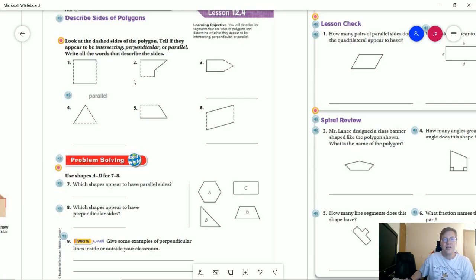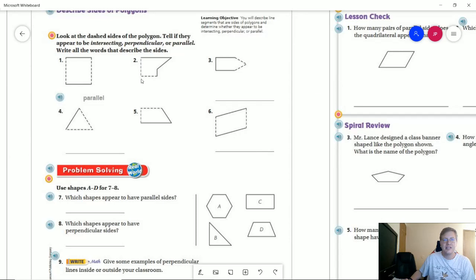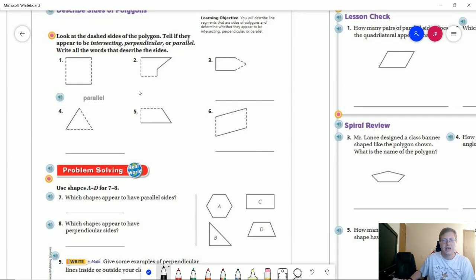So to start with, for number two, we are looking at the dashed lines here. Those are going to be perpendicular, so I'm going to put PE for that. For number three, we have intersecting. For number four, we have intersecting. For number five, we have perpendicular, and for number six, we have parallel.